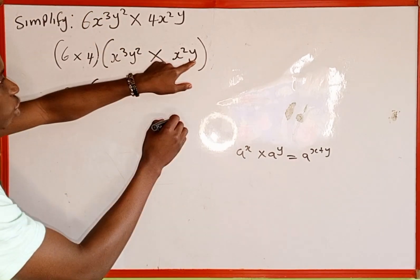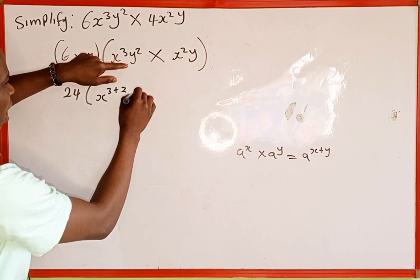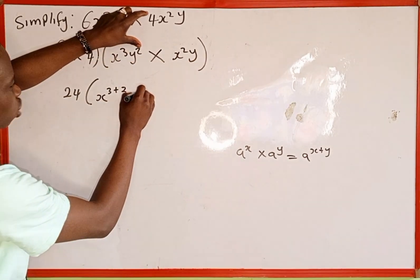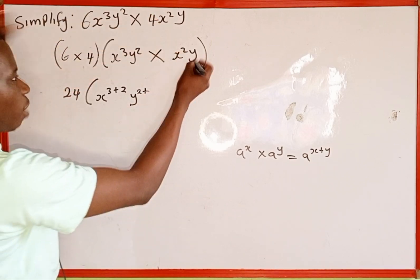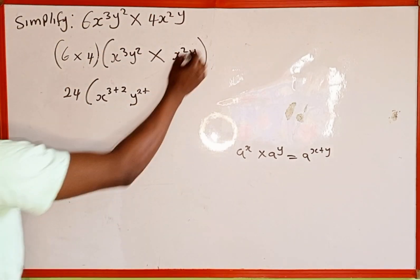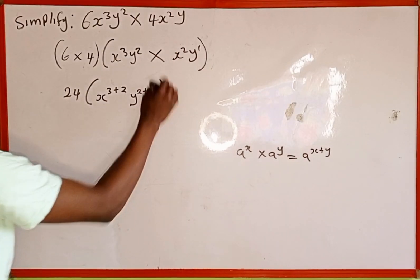Then y² multiplied by y. Since the bases are the same, we add the powers. The first power is 2, and y is the same as y¹, so we have 2 + 1.